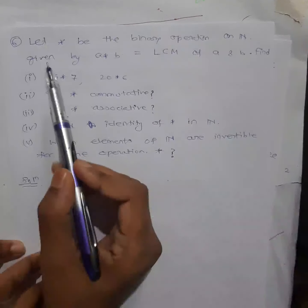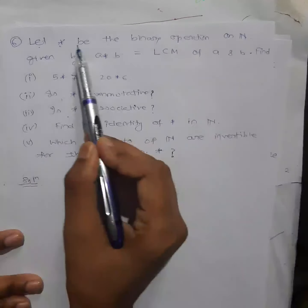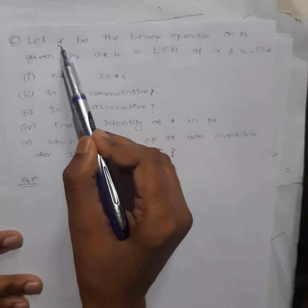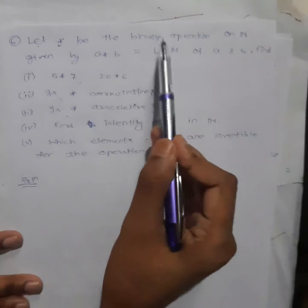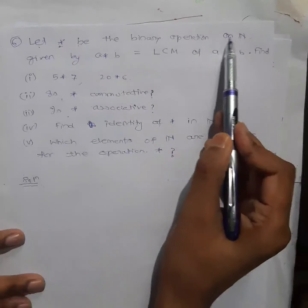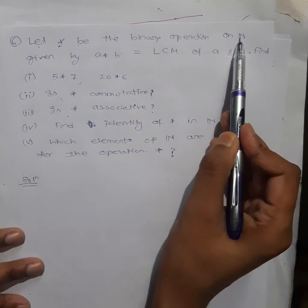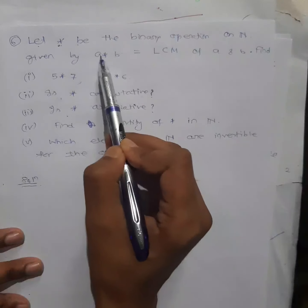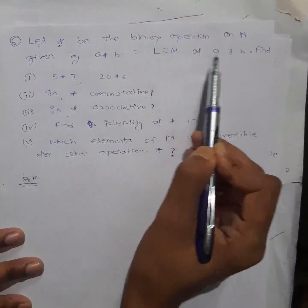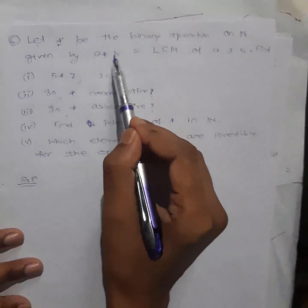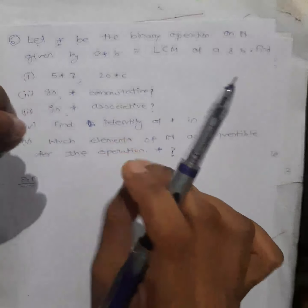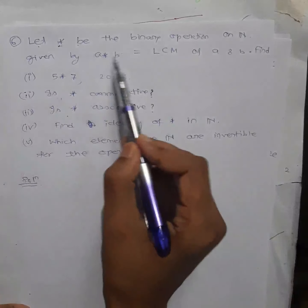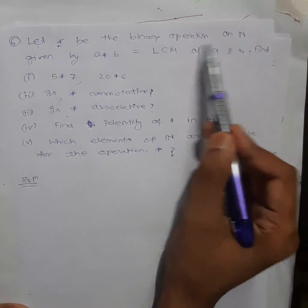Student question number 6. Let's start with the binary operation. This time we don't have to find if this operation is binary or not — they have already given it. Binary operation on set of natural numbers is given by: the operation between two elements is the LCM of A and B. If two inputs you give, the operation will be the LCM of those two elements. LCM of two elements will be your output.